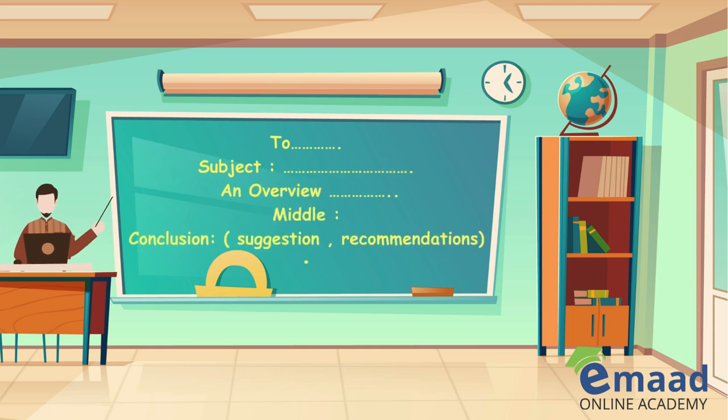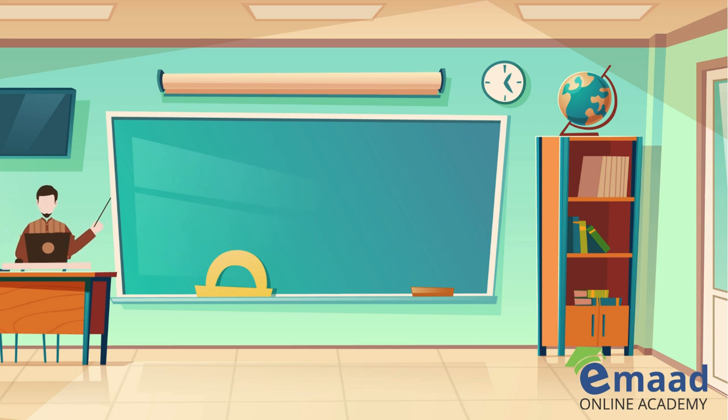Here is the format: you write who you are writing to — for example, 'To: Principal' — and state the subject, such as 'To give an account of the quarrel between students.' In the beginning you give an overview, then there is a middle section, and then a conclusion. In the conclusion you can give unbiased recommendations and suggestions for the benefit of your community, not just yourself.